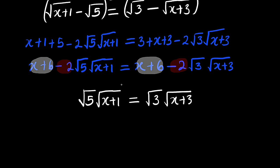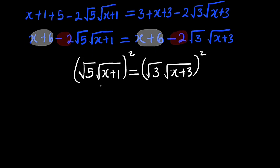Again, we can square both sides from here. Square both sides. To the left hand side, you have 5 multiplied by x plus 1. To the right hand side, you have 3 multiplied by x plus 3. Because the power of 2 will eliminate all the square roots.